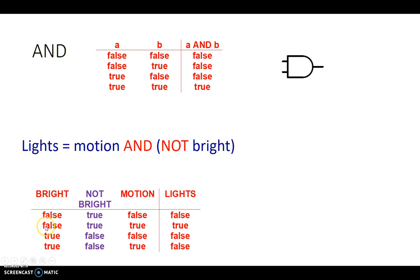In this case, second example, it's NOT BRIGHT outside, so NOT BRIGHT is TRUE, MOTION is TRUE. So it's NOT BRIGHT outside and there is some kind of motion detected, so the light should come on. TRUE.